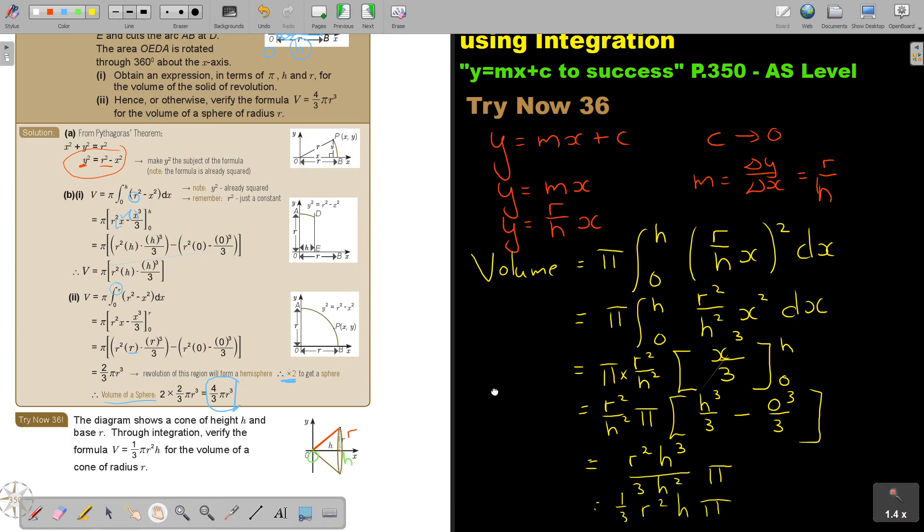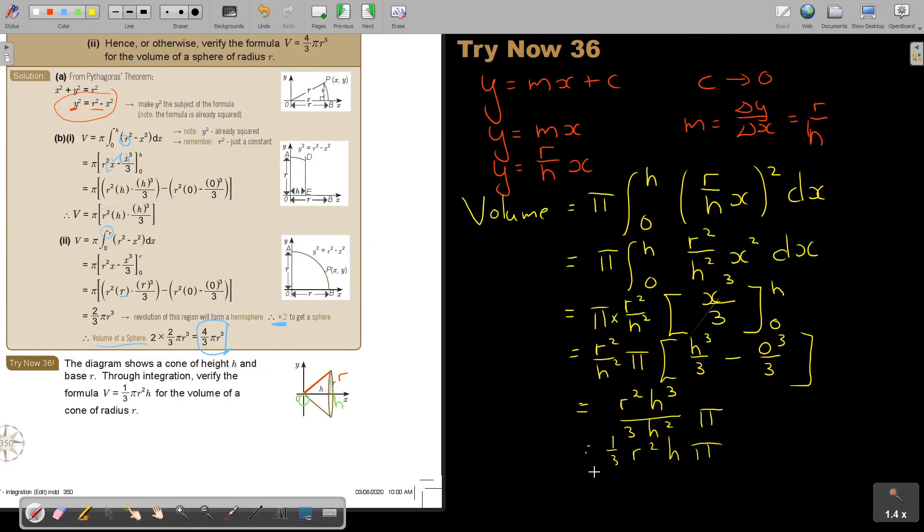And magic. Therefore, volume of a cone equals 1/3, and you can arrange it like area of circle, so it's πR² times H. Because it's the area of a circle times the height and it's just a third. You can rearrange it so it looks more familiar. That is how you derive the formula of a cone by making use of integration.